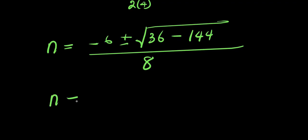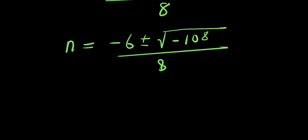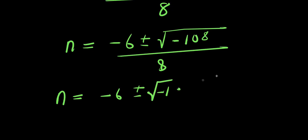From here, n equals negative 6 plus or minus square root of (36 minus 144), which gives negative 108, divided by 8. We have a negative under the square root, so we write it as square root of negative 1 times 108.